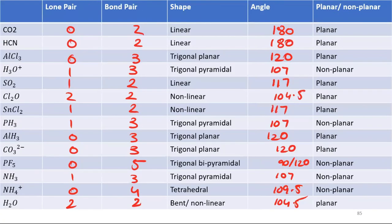Here is a table that I have made. There are some compounds written — CO2 and others — listed with their bond pairs, lone pairs, bond angle, shape, and whether they are planar or non-planar.